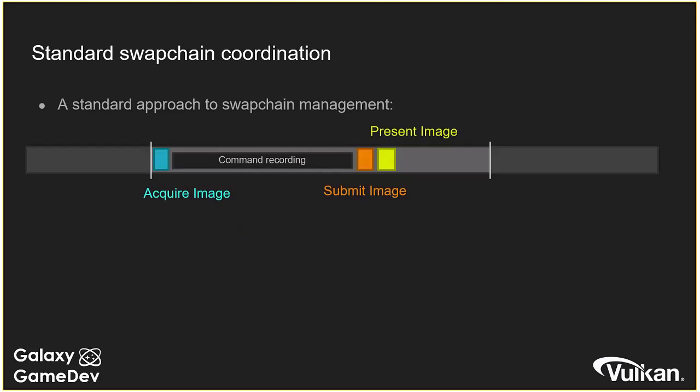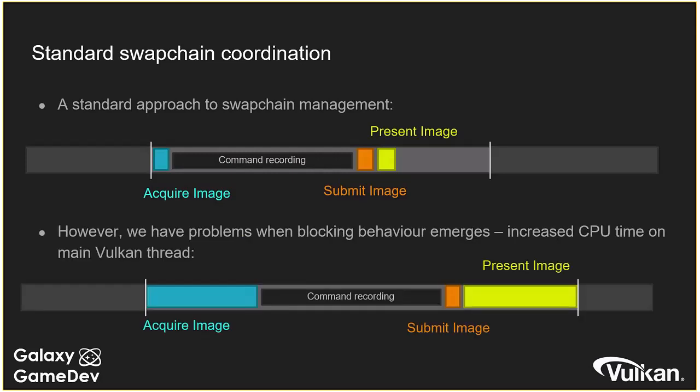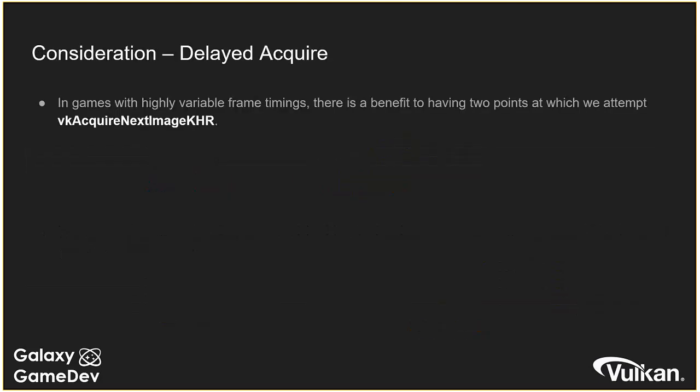In a standard swap chain implementation, we acquire the image, encode our frame buffer, record commands, then submit and present. This is fine if we've got a standard frame time and aren't using the CPU too much — Vulkan is very lightweight. But we start running into problems when we hit the blocking behavior. In a single graphics thread environment, we can quite easily run into unexpected delays frame by frame, especially with the present image function, which can block for substantial amounts of time on mobile causing stuttering.